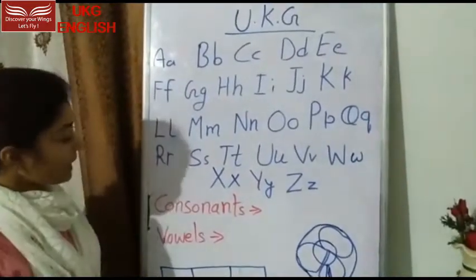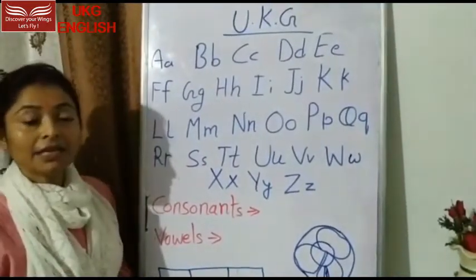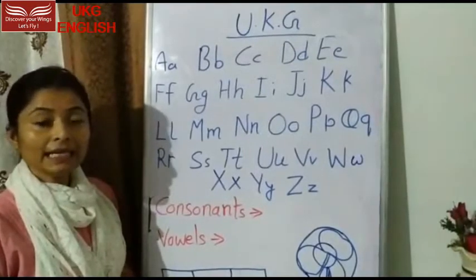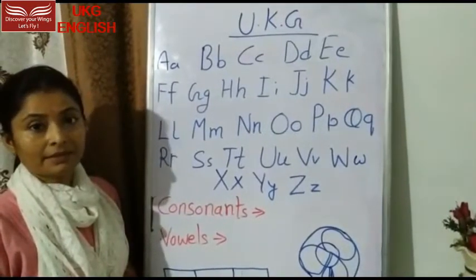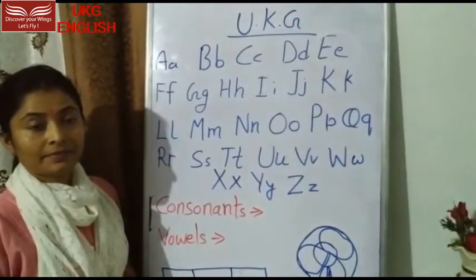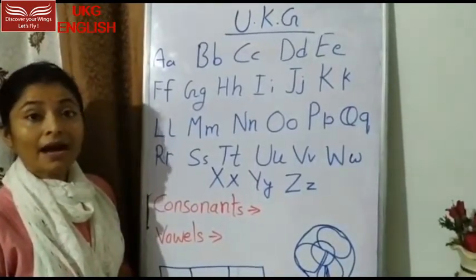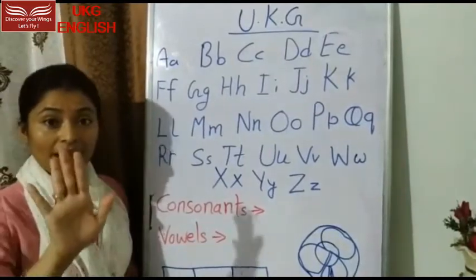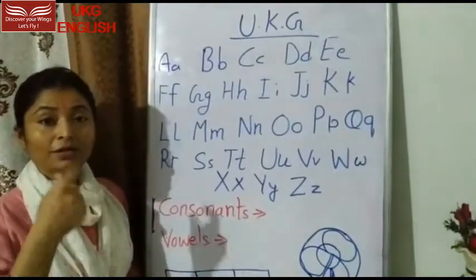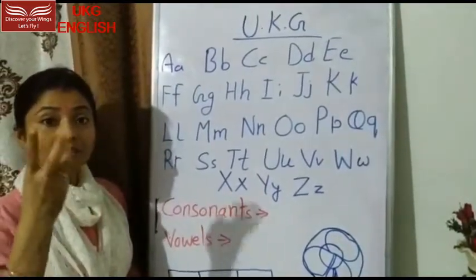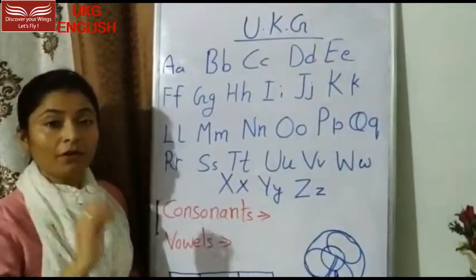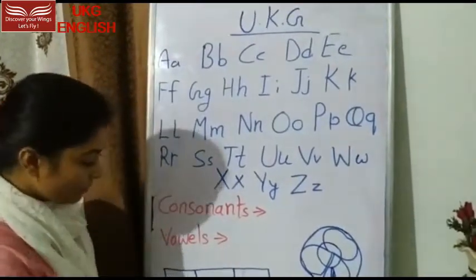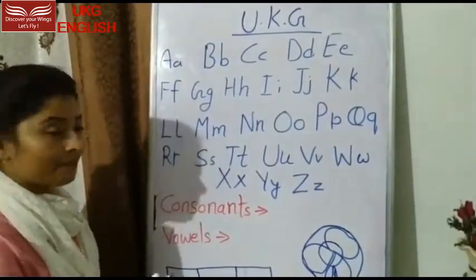So how many vowels are in the English alphabet? Five vowels — there are five vowels in the English alphabet. How many vowels? Five vowels.